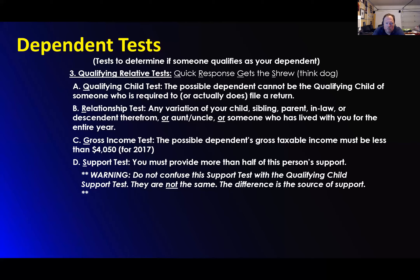Let's find out if they're a qualifying relative because they're different than a qualifying child. This is just to find out — this is for dependency.